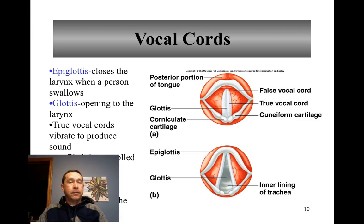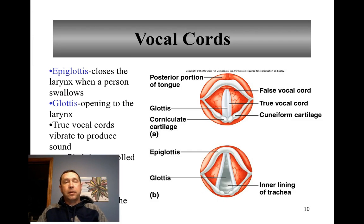There are two sets of vocal cords; the true vocal cords produce sound. The pitch of the sound is controlled by tension — the higher the tension, the higher the pitch. The intensity or loudness is controlled by the force of air. When males go through puberty, their vocal cords thicken and vibrate at a lower frequency, giving them a lower pitch.